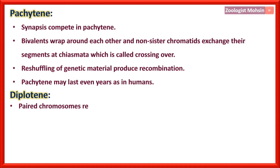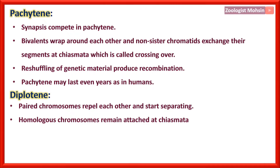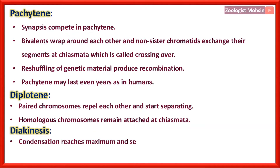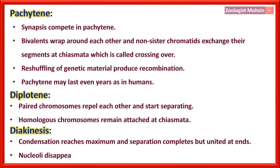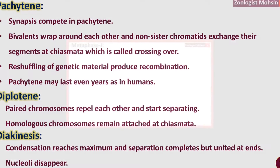Diplotene: paired chromosomes repel each other and start separating; homologous chromosomes remain attached at chiasmata only. Diakinesis: condensation reaches maximum and separation completes, but chromosomes are still united at the ends. Nucleoli disappear at the final stage of diakinesis.